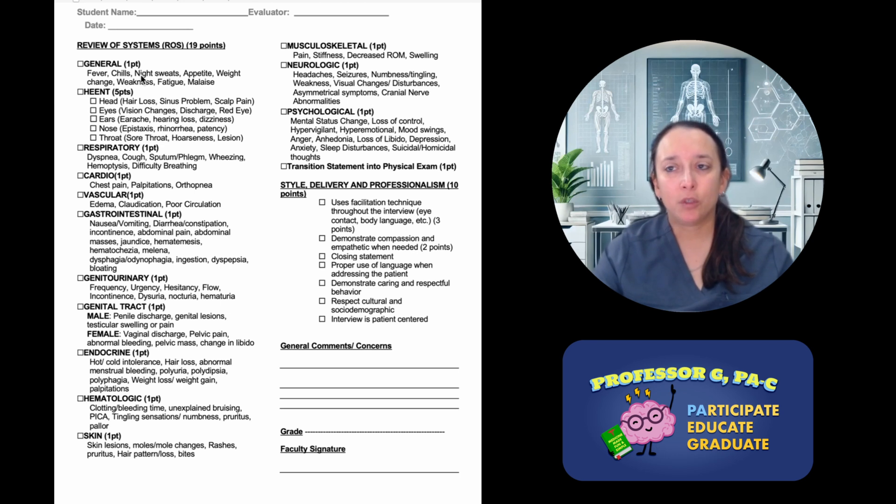For review of systems, you cannot do a relay of questions. You can't say 'do you have any fever, chills, night sweats' - you can't do that. It needs to be one at a time and you get a quick pause to have the patient answer yes or no. For instance, for the general, I would have to tell them ahead of time: 'Thank you for answering the questions about your social history. Now we're going to move on to a section called the review of systems. In the review of systems, we ask you a lot of yes or no questions about other symptoms you might be having so that we can get a better overall picture of your health.'